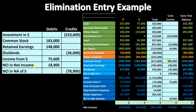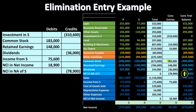We need two non-controlling interest accounts: one in the equity section and one on the income statement. We take the net income and calculate the proportional amount for the non-controlling interest, which gets posted acting like an expense, reducing consolidated net income. Then we show the non-controlling interest on the balance sheet in the equity section as a single line item. Again, this will make much more sense when we go through practice problems and construct these journal entries line by line.